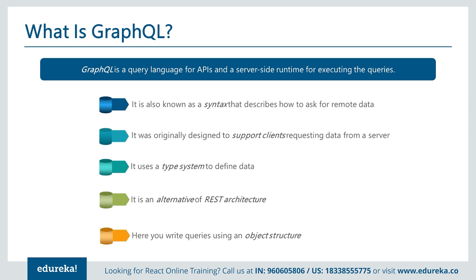GraphQL was originally designed to support client requests for data from a server, specifically for a client who wants a specific set of data. It uses a type system — like int, float, and similar types — to define the data. It is an alternate to REST architecture as it doesn't follow the HATEOAS rule, and here you query using alternate structures.